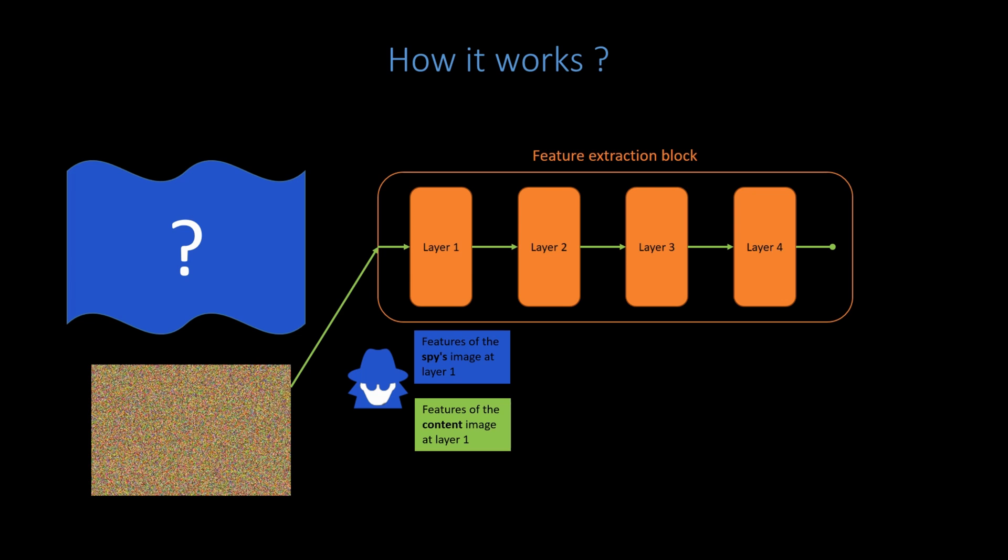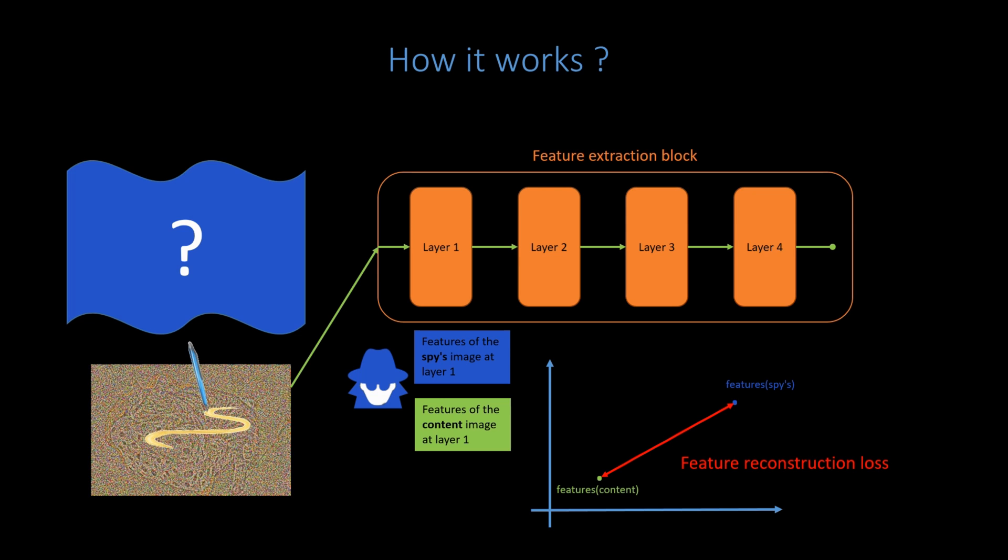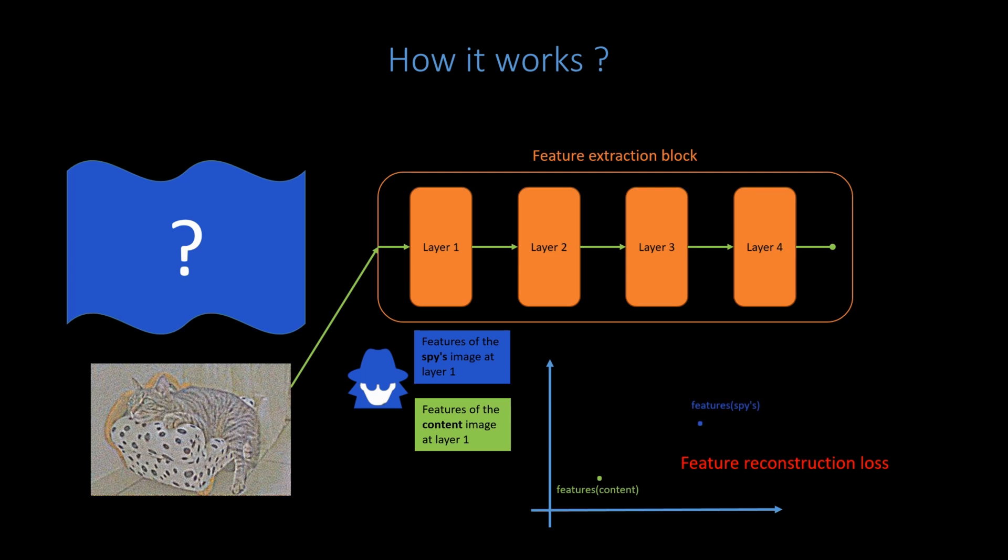Features are just numbers. They can be represented by vectors in a high dimensional space. And we can calculate a distance between the features of the content image, and the features of the spy's image. In the research paper, this distance is called feature reconstruction loss. From the distance value, the spy knows how to slightly modify the random image, in order to lower the distance during the next iteration. Let's repeat the process again. The modified image is given as input to the net, which calculates new features. Which hopefully, gets closer to the features of the content image. The spy then again updates his image accordingly.